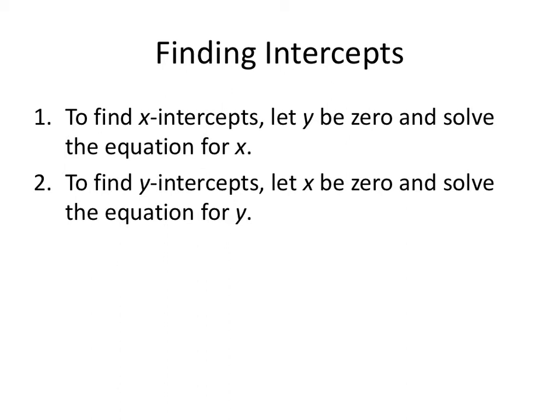Anytime you're finding the intercepts for any function, to find x-intercepts, let y be 0 and solve the equation for x. If y is 0, x is the only variable left, so when you get your answer x equals whatever it happens to be, you remind yourself those are the x-intercepts. It's the x-coordinate and the y-coordinate will be 0. To find y-intercepts, let x be 0 and solve the equation for y. So anytime you want to find an intercept, set the other value equal to 0 and solve.